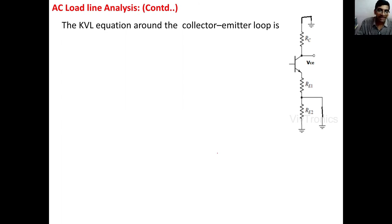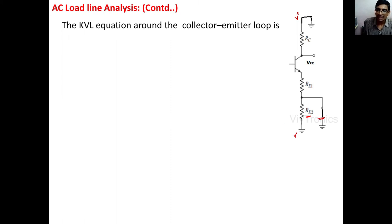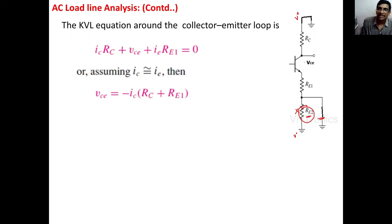To get the AC load line, we ground all the DC sources — V+ and V− are grounded. We also short-circuit all capacitors. The emitter bypass capacitor Ce is short-circuited, so Re2 is in parallel with a short circuit — meaning Re2 has no effect and can be neglected. Therefore Re1 is directly grounded, and Ce is short-circuited.